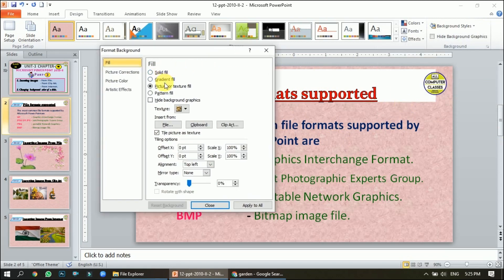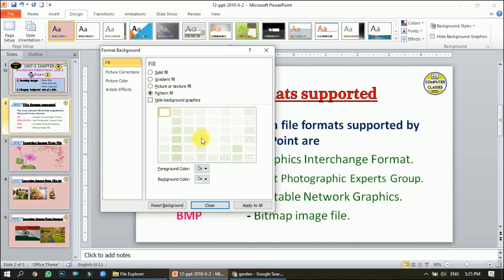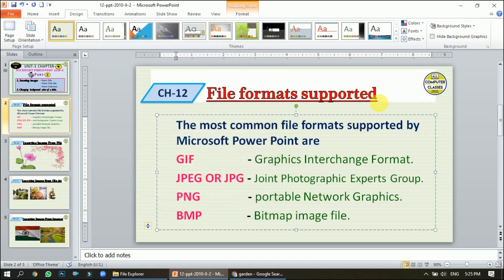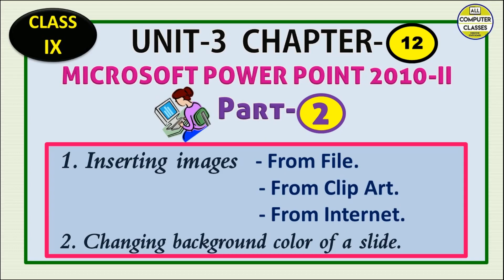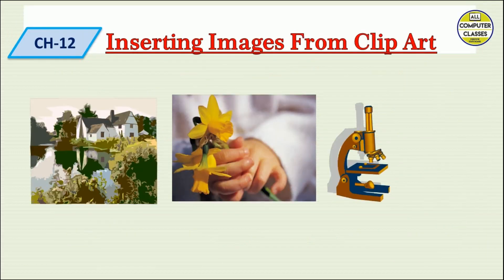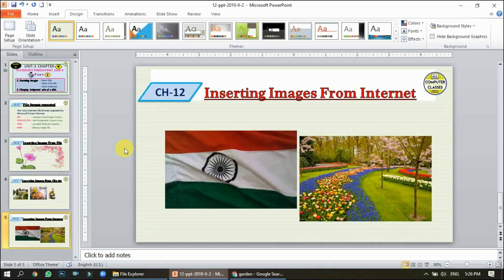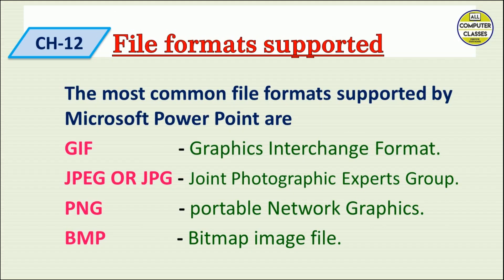Let's go again to Format Background. The options are: Solid Fill, Gradient Fill, Picture or Texture Fill, and Pattern Fill — some patterns are also available here. I'll click Apply and this pattern is applied to all slides. You can see in the background a very thin green line pattern is appearing. This is how we can change the background styles.